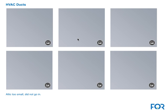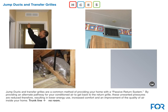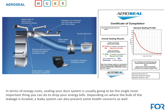You can show homeowners that their ducts are leaky — zoomed-in pictures from the return and from inside the registers together make a strong case. If there are no pictures, the sales rep has to say 'take my word for it,' and that's a lot harder to sell. Customers need visual proof, so get pictures from inside the trunk lines to show how leaky they are and support the Aeroseal recommendation.